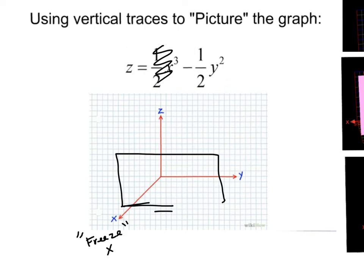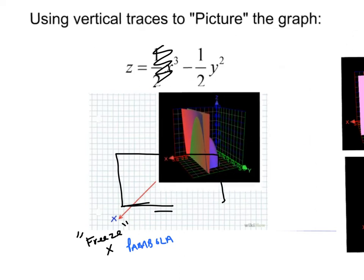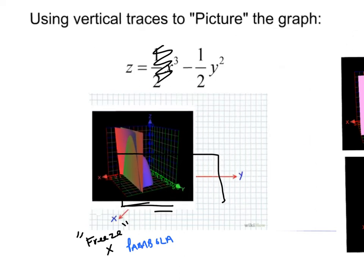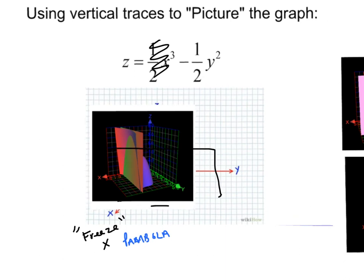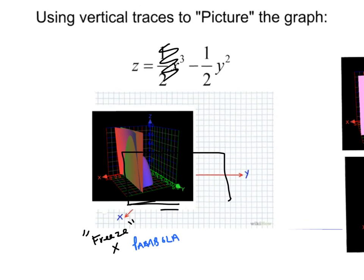Well, if I freeze x and I've got negative y squared, I should see some kind of parabola. Right? Because that's what negative y squared looks like. Well, I did that, and I did the graph, and there you can see I froze x. And you can see that there is a parabola that I'm seeing when I look at it.